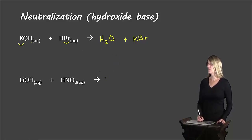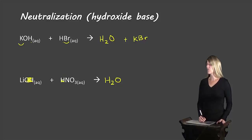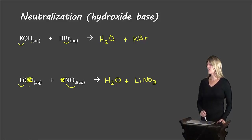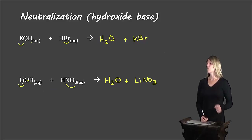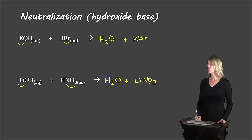Let's look at the next example. Water is a product, coming from the hydroxide base's OH and the H from the acid. Crossing those out leaves us with lithium and nitrate, so the salt is LiNO₃. Checking balance: two H's on each side, one oxygen, one lithium, and one nitrate on each side — it's all balanced out already.